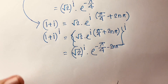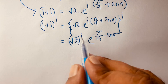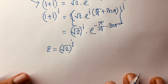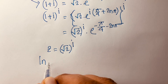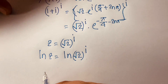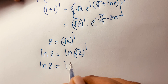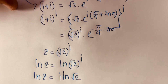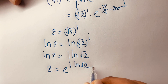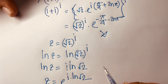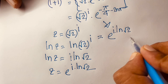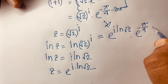Now we need to find (√2)^i. Let z = (√2)^i. Taking the natural log of both sides: ln(z) = i·ln(√2), so z = e^(i·ln(√2)). Therefore (√2)^i = e^(i·ln√2), and our final answer is (1+i)^i = e^(i·ln√2) · e^(-π/4 - 2nπ).